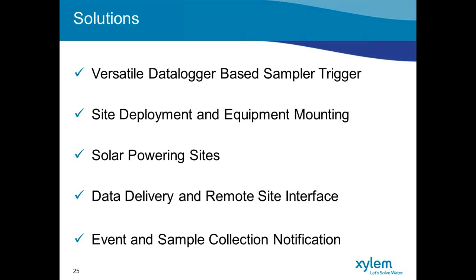The WaterLog Storm3 data logger can perform key triggers such as rainfall intensity, level rate of change, any water quality instrument, and is not limited to any specific model or manufacturer. It can perform flow and flow-proportional sampling using instruments like the SonTech IQ and the Argonaut SL. We can also use basic code to implement more complex triggers, creating whatever algorithm or logic is needed.